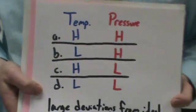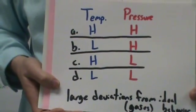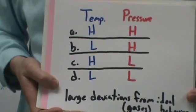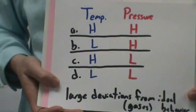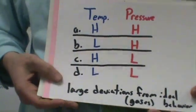When would you get the largest deviations from ideal gas behavior? That would be low temp and high pressure, so it'd be B.